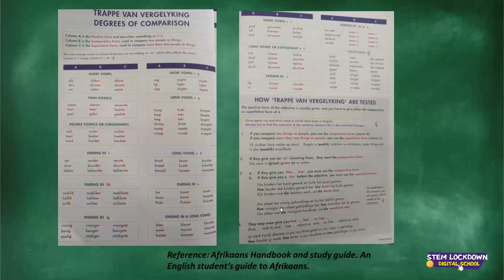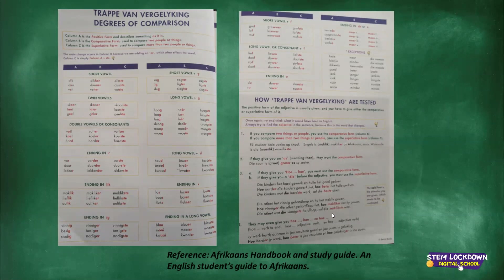Example: 'Die atleet het vinnig haarklip en hy het maklik gewen. Hoe vinniger die atleet haarklip het, hoe makliker het hy gewen. Die atleet wat die vinnigste sal die maklikste wen.' You can see all the comparative and superlative forms in that sentence. They may even give you a 'hoe...en hoe' structure: 'Hoe harder jy werk, hoe beter is jou resultaat, en hoe gelukkiger is jy.' You can see all those comparative forms there.